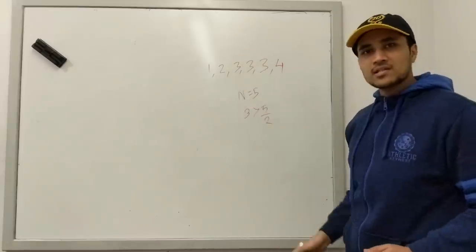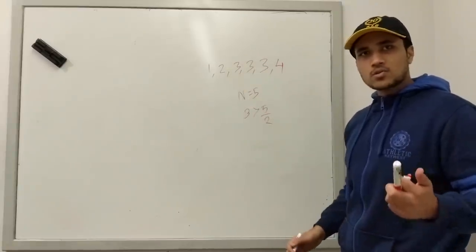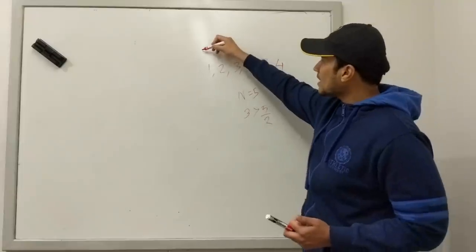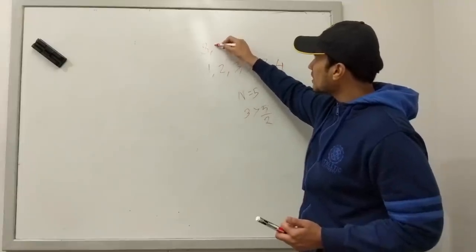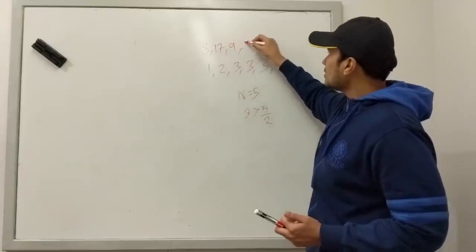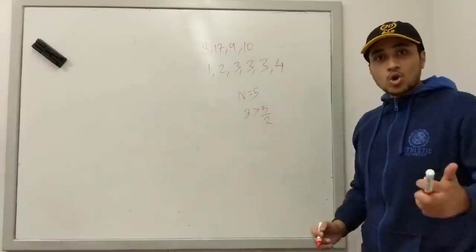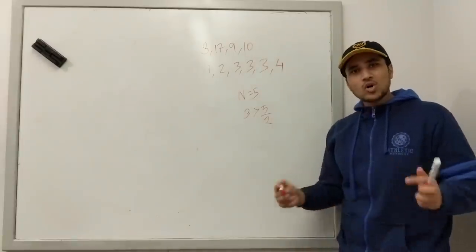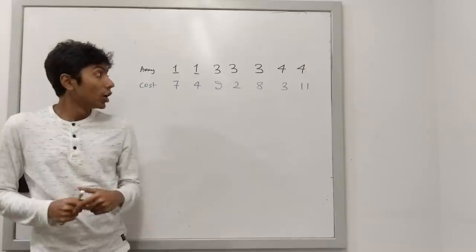What Gaurav needs to do is remove some elements. Each element has some cost associated with it — this one can have a cost of 3, this one 17, 9, 10, and so on. Gaurav has to minimize the overall cost and make the array balanced. Let's see how we do that.